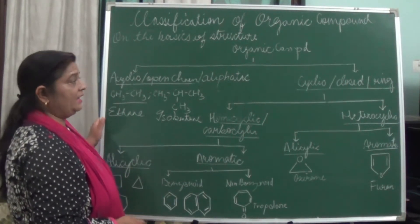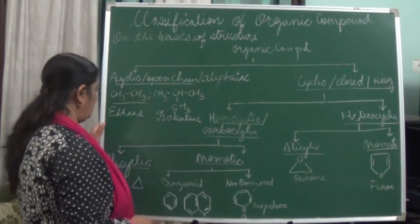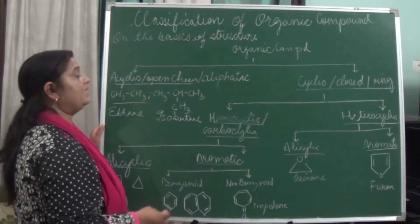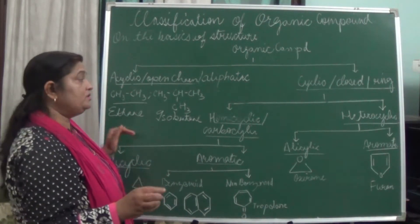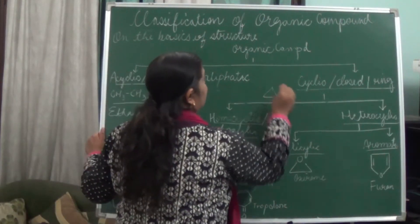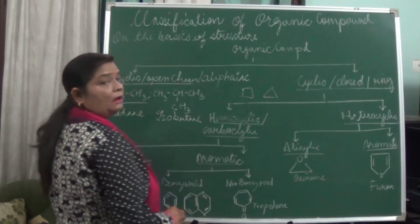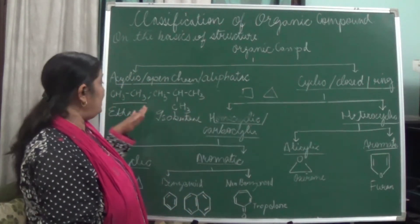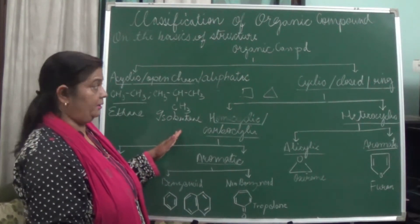When we say anything which is closed — closed or ring or cyclic compounds — it can be of two types. If I am saying closed, it means it is closed. For example, cyclopropane, cyclobutane — all these are cyclic compounds because they are closed; they are not open like ethane and isobutane.